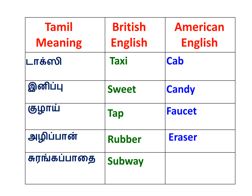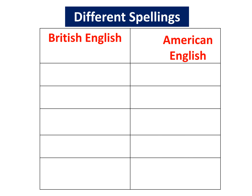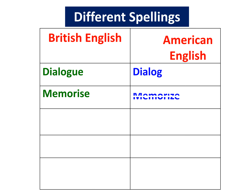Now let's look at spelling differences between British English and American English. The word Dialogue — British English spelling is D-I-A-L-O-G-U-E. American English is D-I-A-L-O-G, the last two letters U-E are removed. Next word is Memorize — American English ends in Z-E, British English ends in S-E. Next word is Colour — British English is C-O-L-O-U-R. American English is C-O-L-O-R, the U is removed.